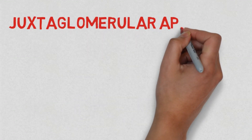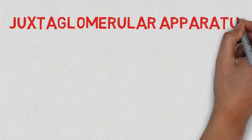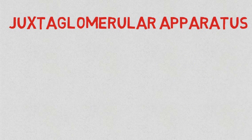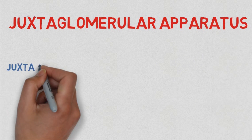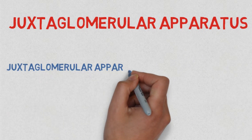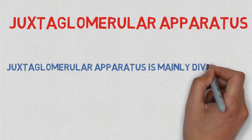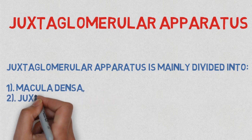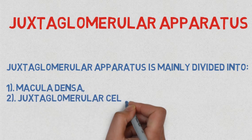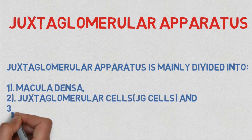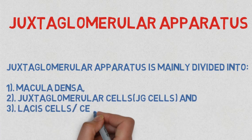So let's discuss the juxtaglomerular apparatus. The juxtaglomerular apparatus is mainly divided into three components: macula densa, juxtaglomerular cells (JG cells), and lacis cells, also known as cells of Polkissen.